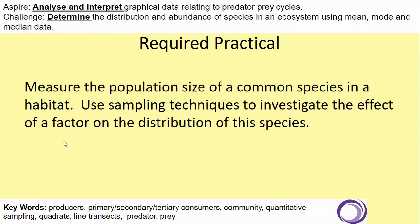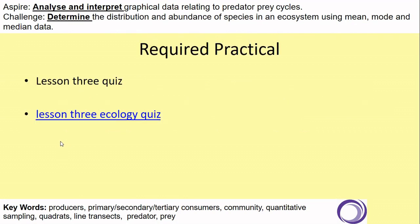As we saw at the start of the PowerPoint, the syllabus requires a practical at this point. We have to measure the population size of a common species in a habitat, use sampling techniques to investigate the effects of a factor on the distribution of this species — using either a quadrat or a transect line — and also look at graphical data and describe it in word form. The last slide has a link to a brief ecology quiz for short-answer understanding. Hopefully you now have a completed Google document with methods for transect line and quadrat, and the ecology quiz. Thanks for working through this.